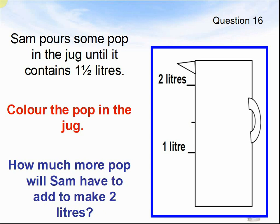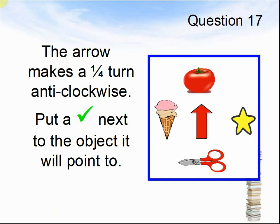Here comes question 17. The arrow makes a quarter turn anti-clockwise. Put a tick next to the object it will point to. Pause the video until you are ready for question 18.